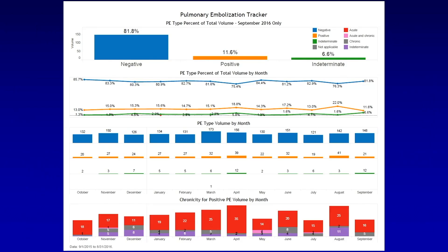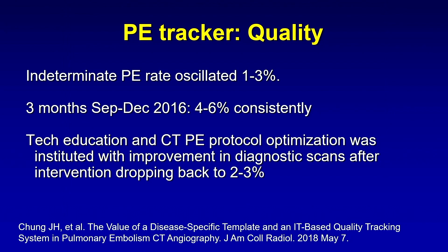Something else that the PE-specific structured template allowed them to do was to track the PE-specific data longitudinally from month to month in an IT-based tool they call the PE tracker. One of the variables they tracked was the indeterminate rate of CT PE studies — that is, studies that are technically inadequate for PE evaluation.